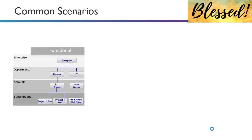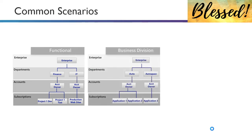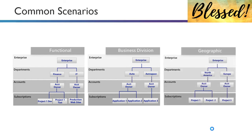Microsoft showcases three common enterprise hierarchy scenarios. First, a functional example with departments like finance and IT, with subscriptions based on projects such as production websites or dev/test. Second, a business division model with divisions like auto and aerospace, where subscriptions are based on applications. Third, a geographic model used by global companies, with departments in North America, Europe, and Asia, then accounts and subscriptions organized by sub-projects within those regions.